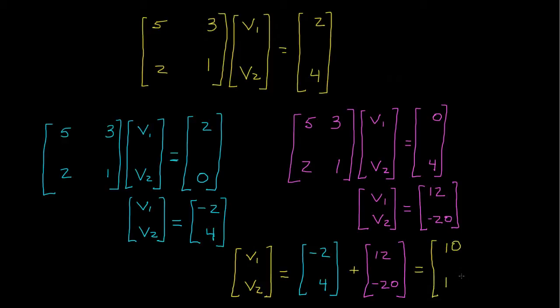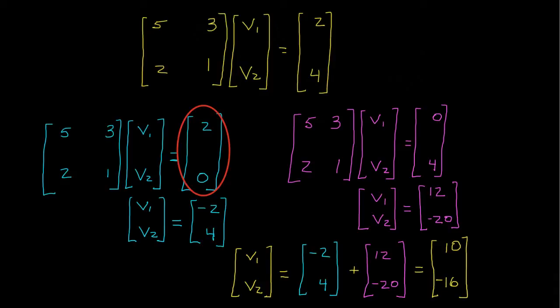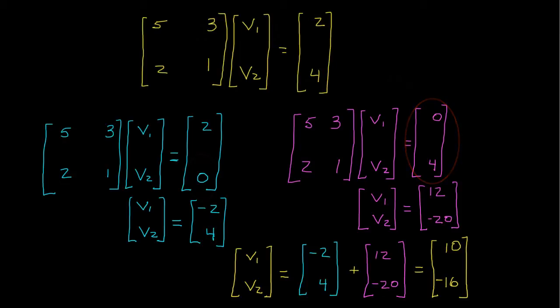Adding those up gives 10 and negative 16. So what I've done is decomposed the input, which has the values 2 and 4, into two components. One has values 2 and 0, and the other has values 0 and 4. In the first case, I set the second known input value — which was 4 — to zero. In the second case, I set the first known input value — which was 2 — to zero. Then I solved for v1 and v2 in each situation, and because the decomposed parts add up to the original driving vector (2, 4), I can add the two solutions together to get the overall solution.